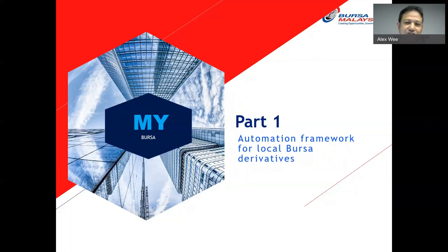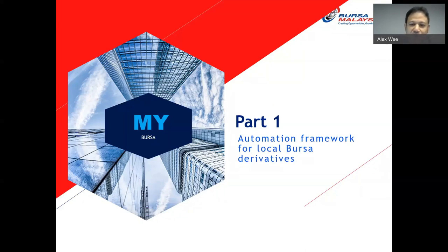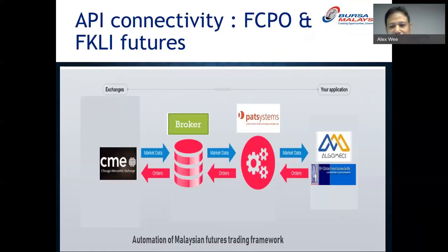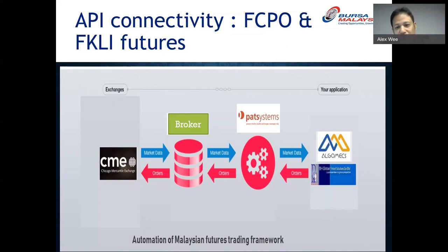Let me start with Part One: Automation. When I first embarked on this journey of wanting to automate FCPO and FKLI trading, there was very little information out there. I'm not broker-specific and not company-specific. A few years ago, to automate, I had to go through certain API vendors to connect my algorithm to the broker. For example, one API vendor was called 'Pat System.' I also had to go through certain IT providers who could help me code my strategy into an algorithm — one such company was called 'Album.'